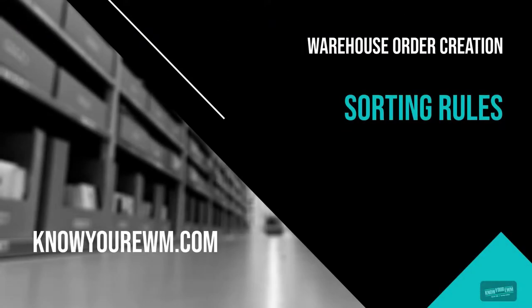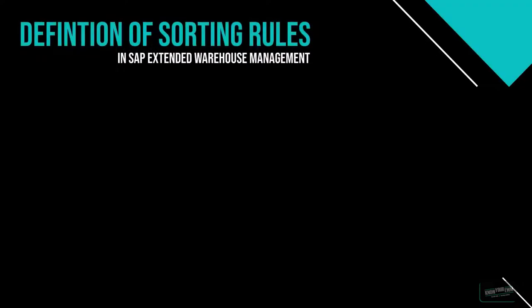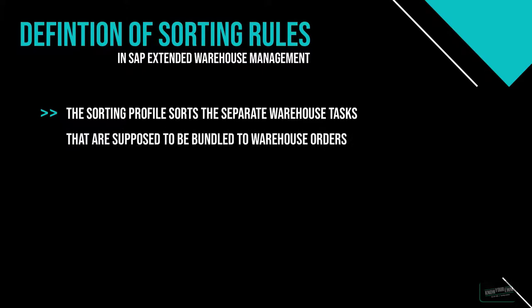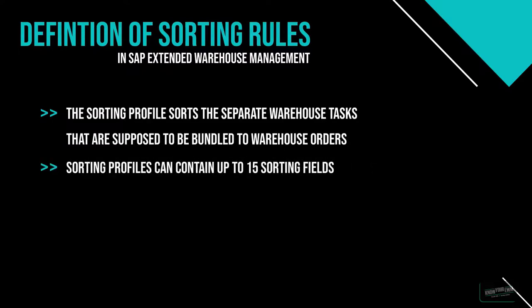Definition of sorting rules. The sorting profile is in charge of sorting the separate warehouse tasks that are supposed to be bundled to warehouse orders. Each sorting profile can contain a list of up to 15 sorting fields we can use for bringing our warehouse tasks in a specific order. To understand how that looks, let us have a look at the following schematic presentation.